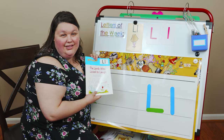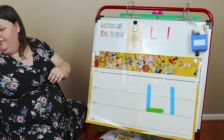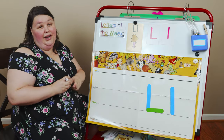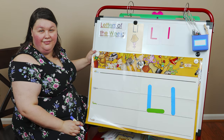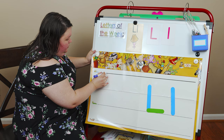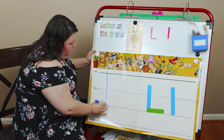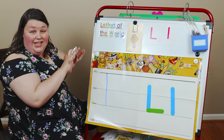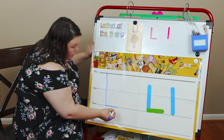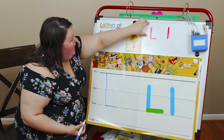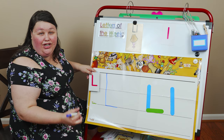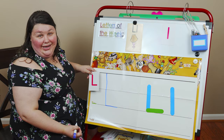Let's practice writing our Ls. Can you get something to write with? Then we can do it together. Pause the video if you need time to get something. I'm going to use my dry erase marker on my dry erase board. The first thing we've got to do is our uppercase L. We're going to go from the sun line to the grass line, then stop. Then on the grass line, we go across — like that. We made an uppercase L together and it took two lines. Pretty easy, don't you think?